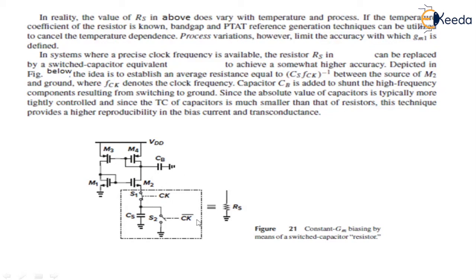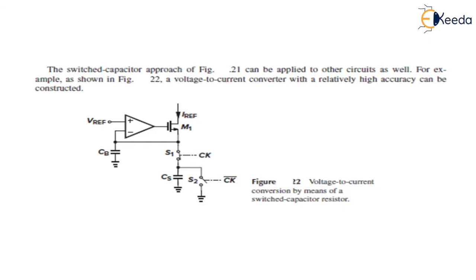The switched capacitor approach of this figure can be applied to other circuits as well. An example shown is a voltage-to-current converter with relatively higher accuracy that can be constructed. In this case also, a shunt resistor is connected and a switched capacitor resistor technique is applied. Switches S1 and S2 are controlled by a clock, and the capacitor is used to implement the resistor, achieving high accuracy.